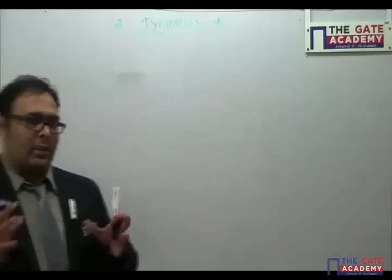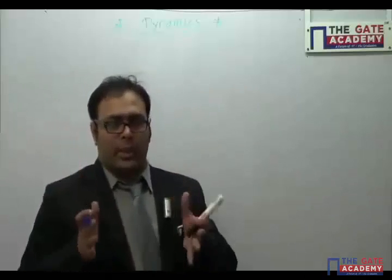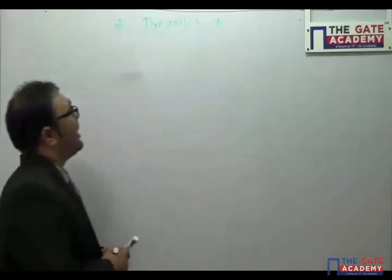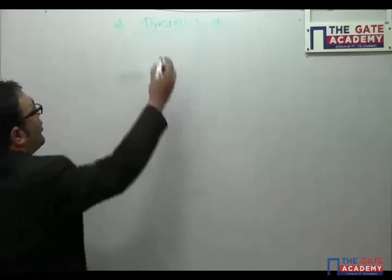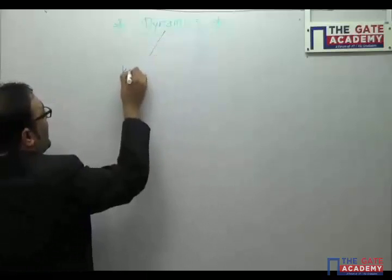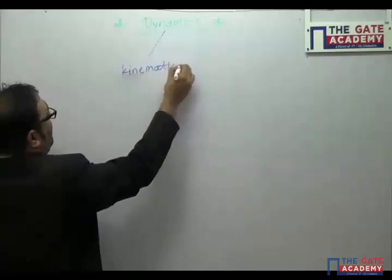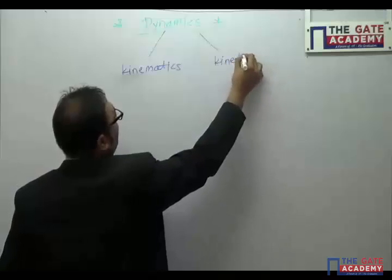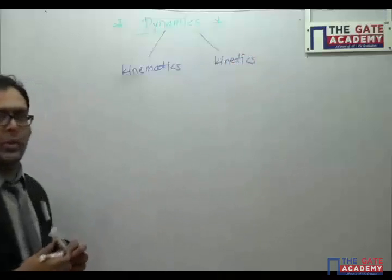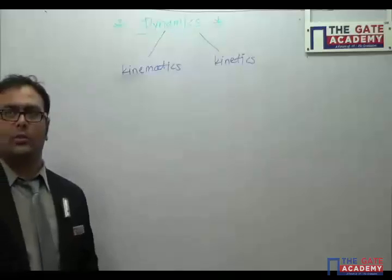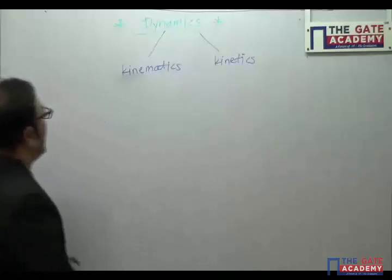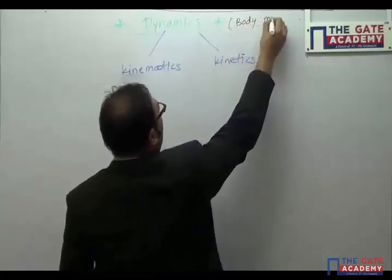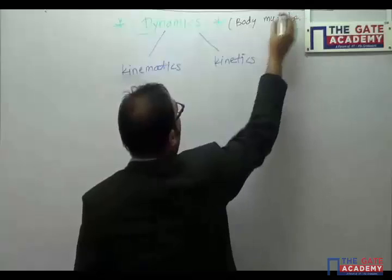In dynamics, the body is rigid and it is moving from one place to another — that is what we study in dynamics. In dynamics there are mainly two portions: kinematics and kinetics. The condition required for this is that the body must be rigid.